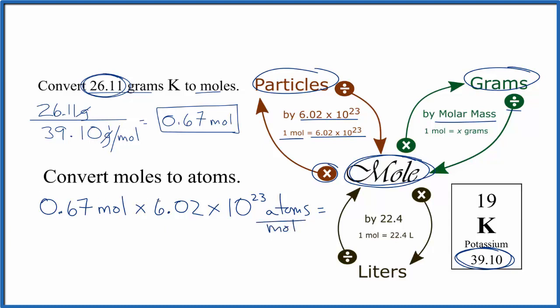We multiply the top, we divide by moles, moles cancel out, and we're left with 4.02 times 10 to the 23rd potassium atoms.